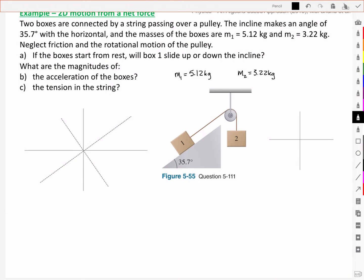So if it wasn't on an incline plane, we'd know which way it would go. However, the incline plane might help, because it will support some of the force of gravity or some of the weight of box 1.